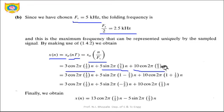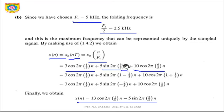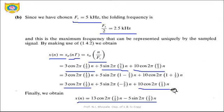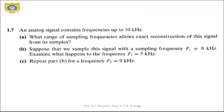Rearranging the terms: 2π·(3/5)N can be written as 2π·(1 − 2/5)N. The first and third components both reduce to 2π·(1/5)·N, giving 3cos(2π·1/5·N) + 10cos(2π·1/5·N) = 13cos(2π·1/5·N). So the final discrete-time signal X(N) = 13cos(2π·(1/5)N) + 5sin(2π·(3/5)N).